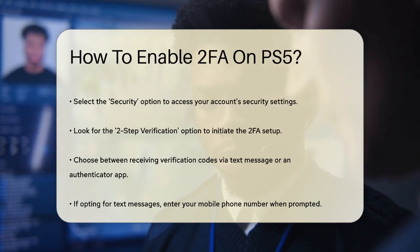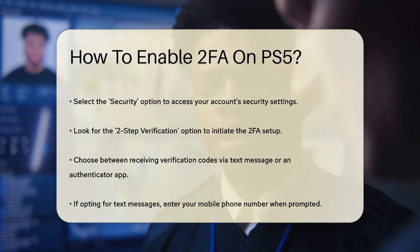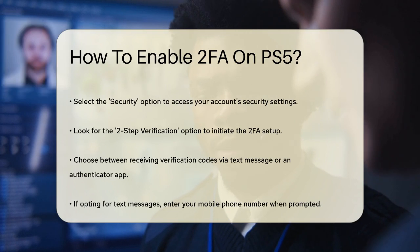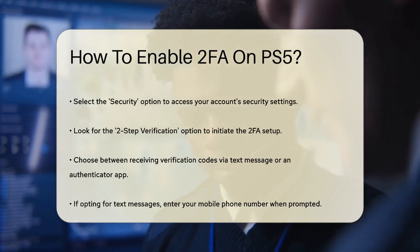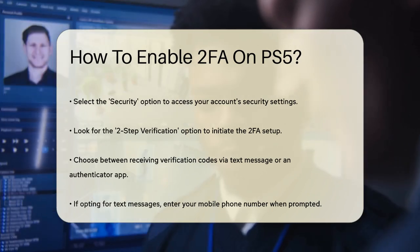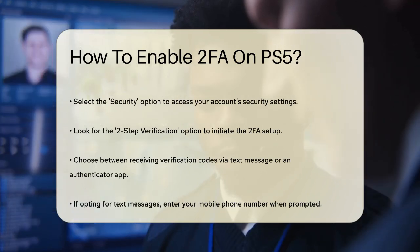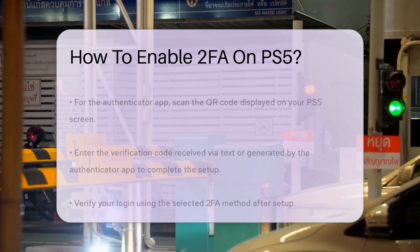If you choose the text message option, you'll need to enter your mobile phone number. If you prefer using an authenticator app, you'll need to scan a QR code that appears on your screen with your app, such as Authy or Google Authenticator.